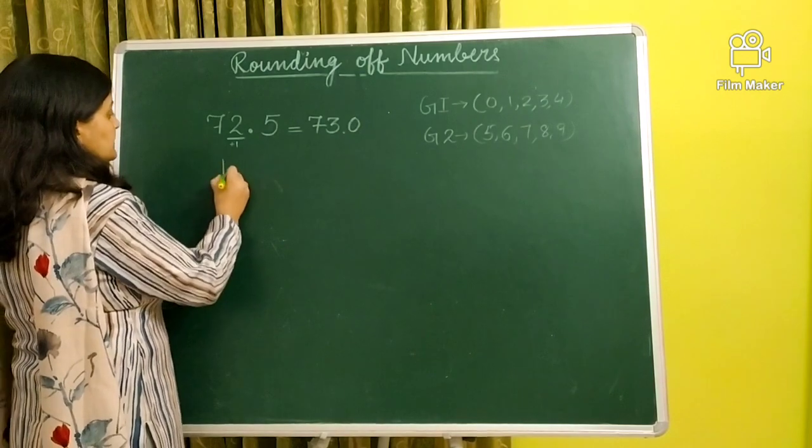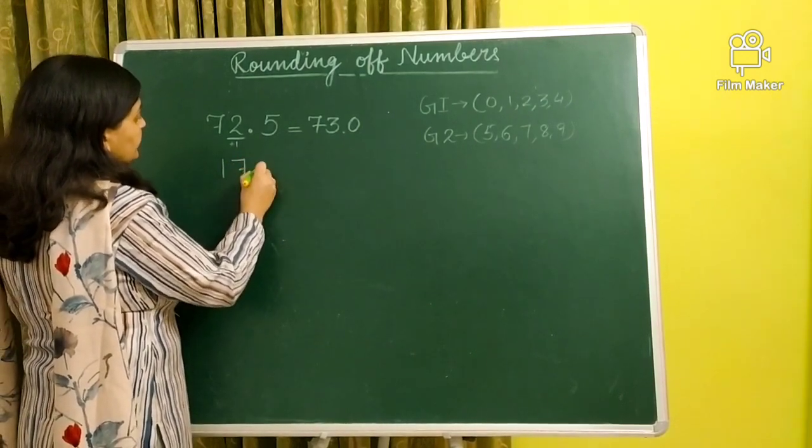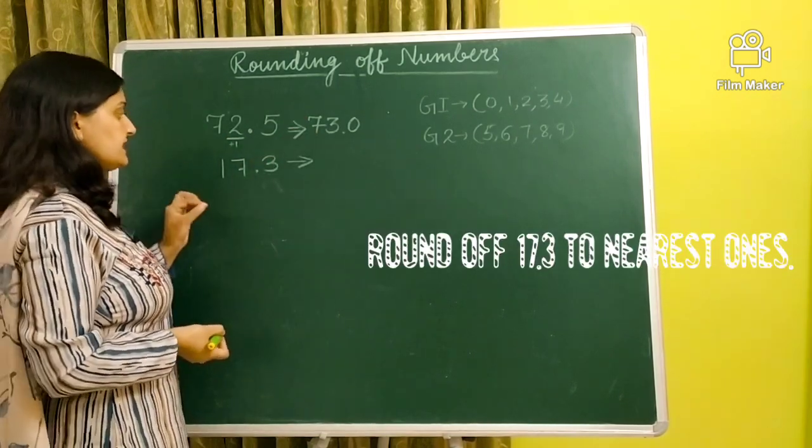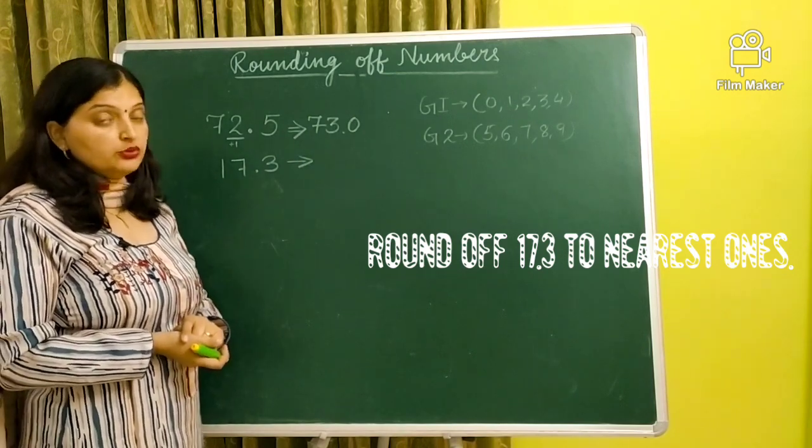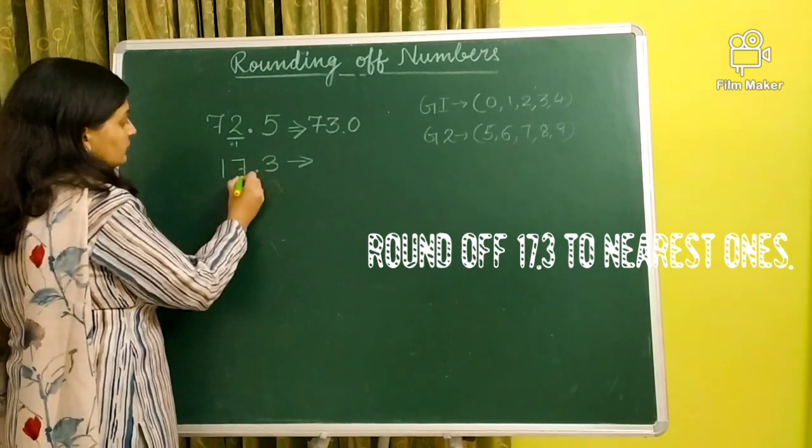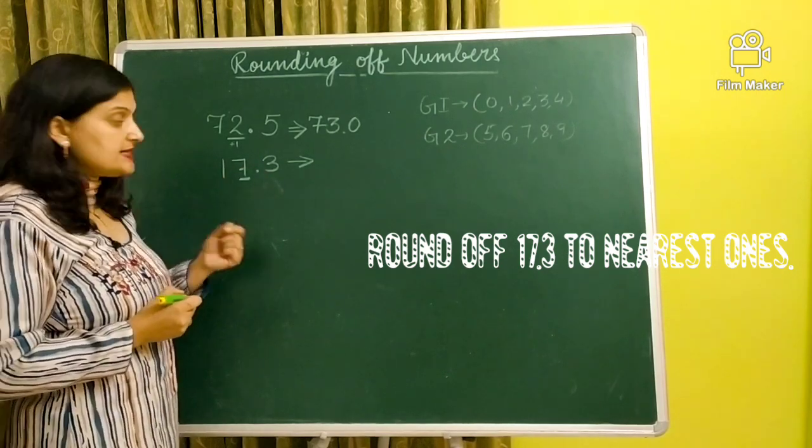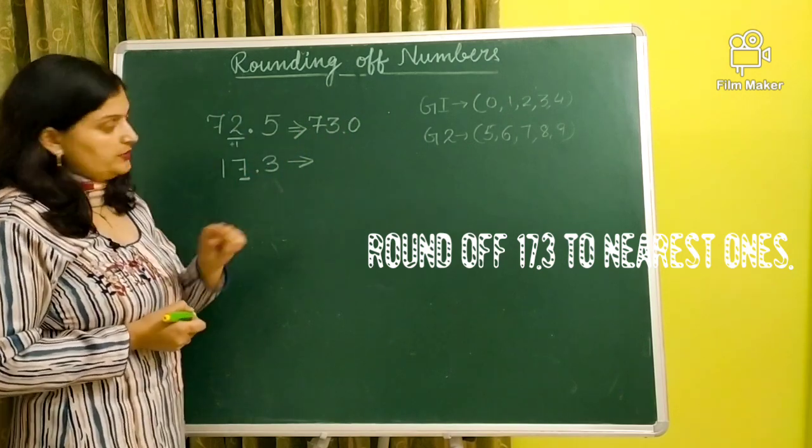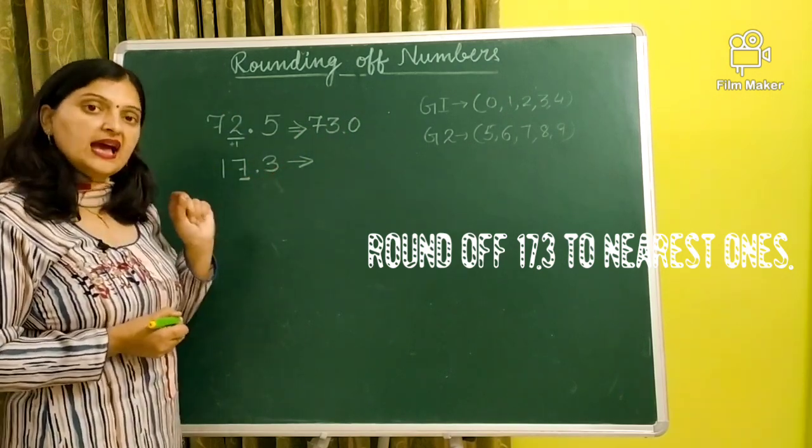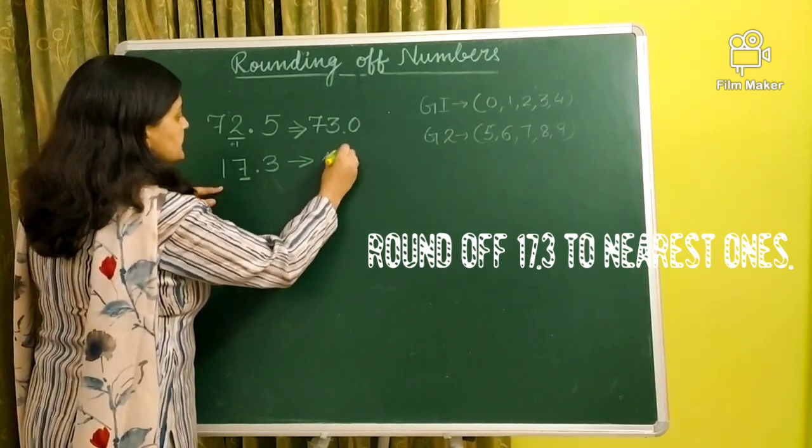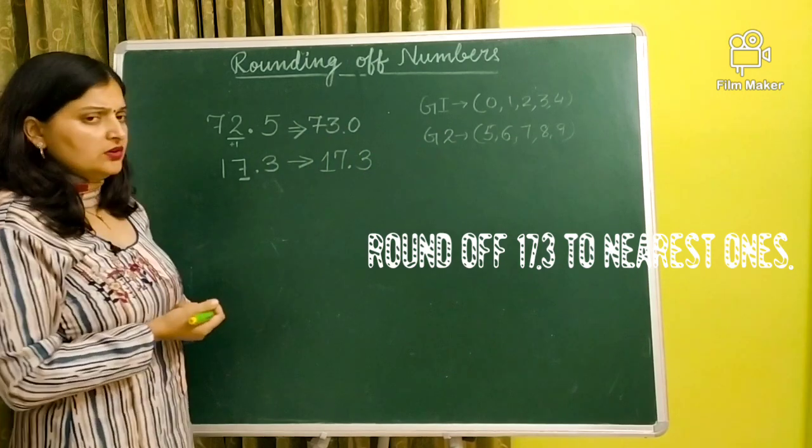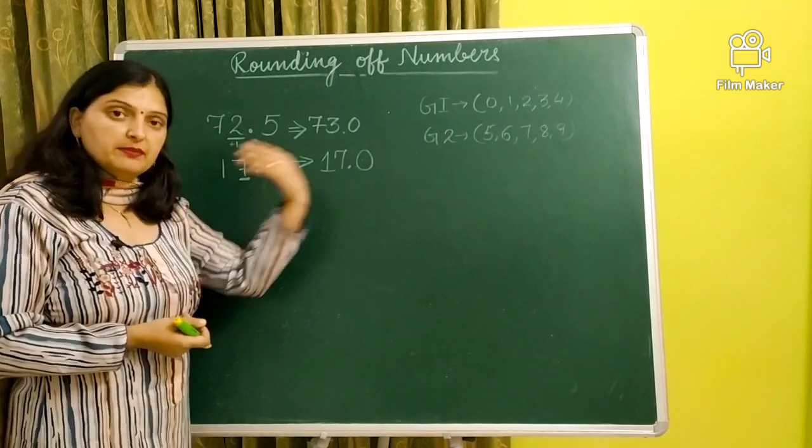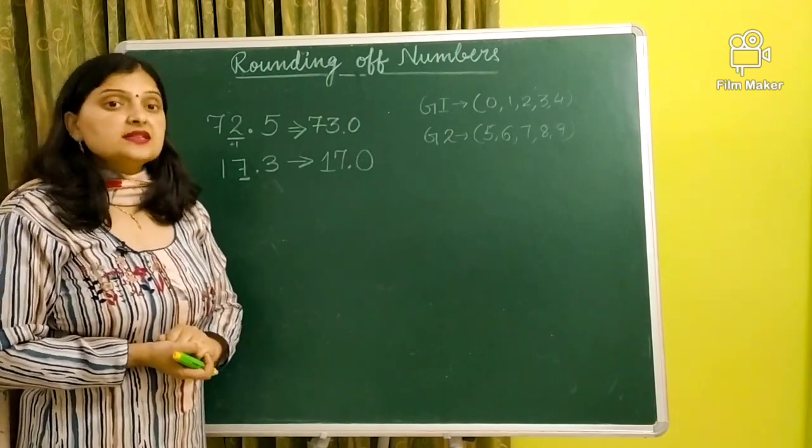Let us take one more example. Suppose we have a number 17.3. We have to round this number. Now, once again, we have to round 17.3 to nearest ones. So again, ones place is seven. Compare with three. Now, three belongs to the first group. If it's in the first group, it means we keep seven as it is. So our answer is 17.0.